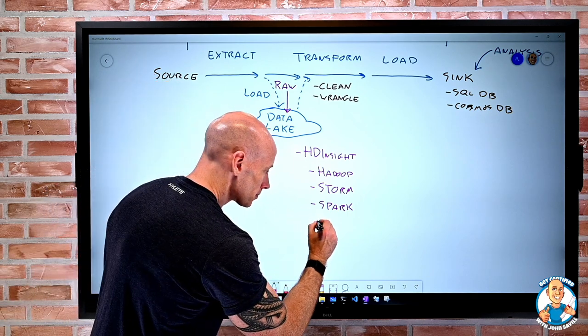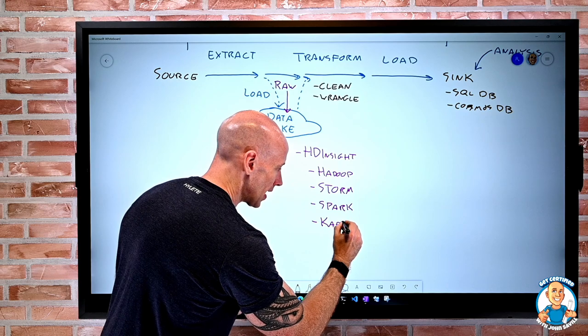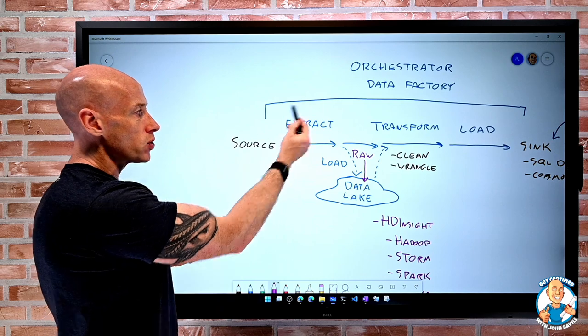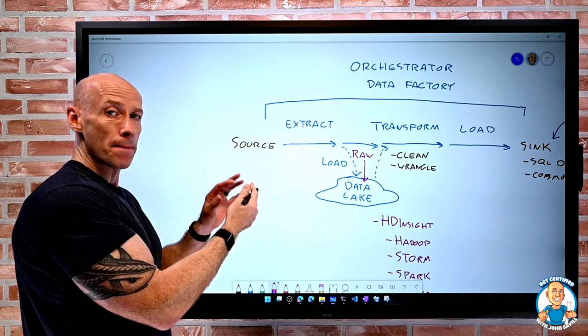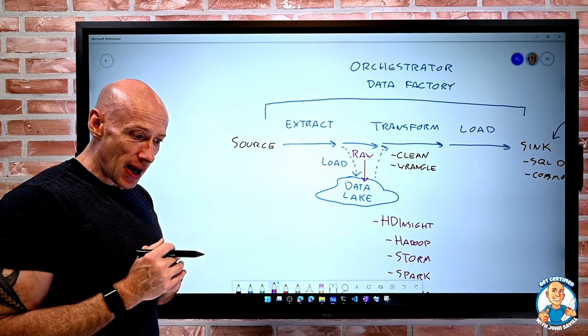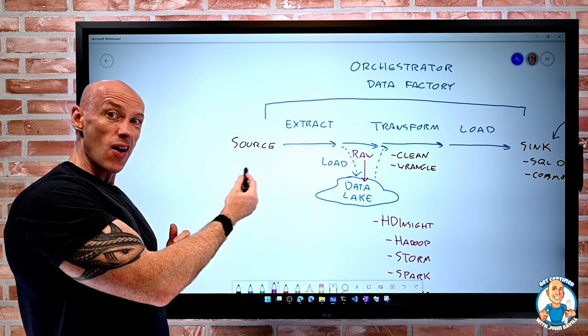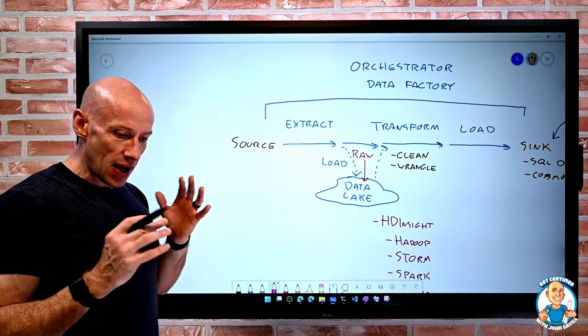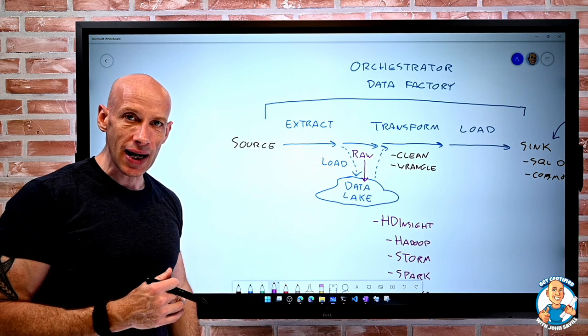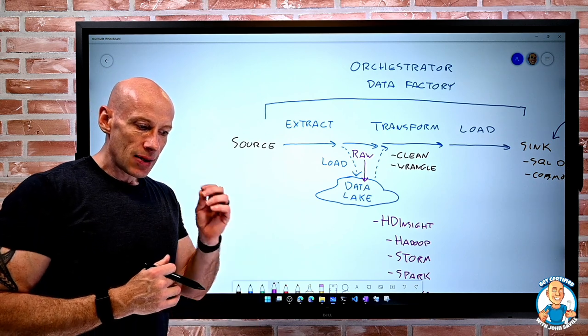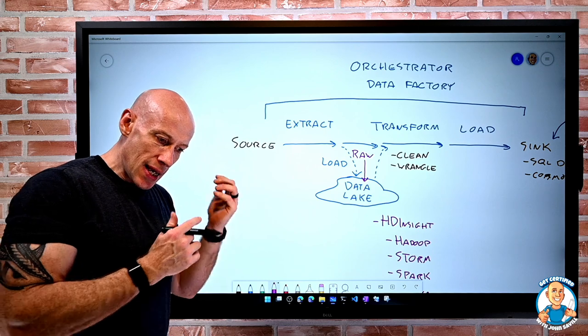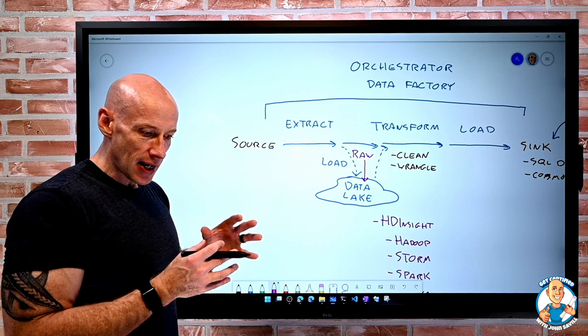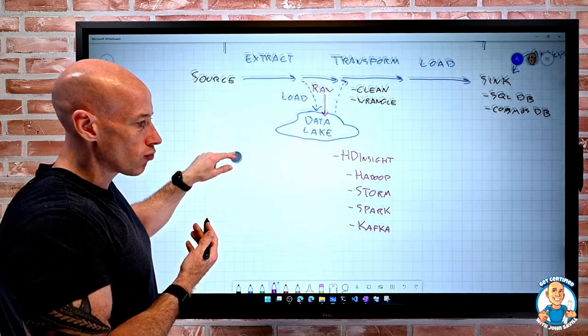Then there's things like Kafka. Kafka is all about big data streaming. So when we think about, hey, these sources, I said there's different types. Maybe it's a batch output of data. Kafka is about the idea that maybe I have, when we talk about IoT, I have huge amounts of sensors. Maybe it's connected cars, factories, whatever that might be. There's a constant stream of data coming in. Well, Kafka is all about ingesting into my pipe and then dealing with that huge quantity of data. So that's what Kafka is really all about.